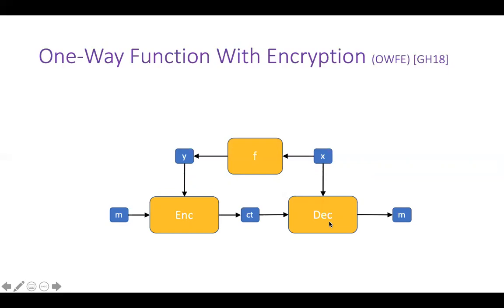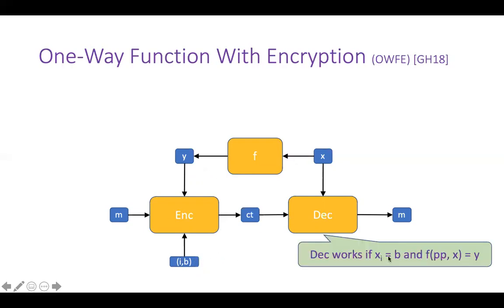That looks pretty similar to public key encryption. To make it something different, the encryption algorithm also takes an index i and a bit b as input. Now the decryption algorithm works if x is a preimage of y and if the i-th bit of x equals b. So not every preimage of y works — only a specific preimage works.